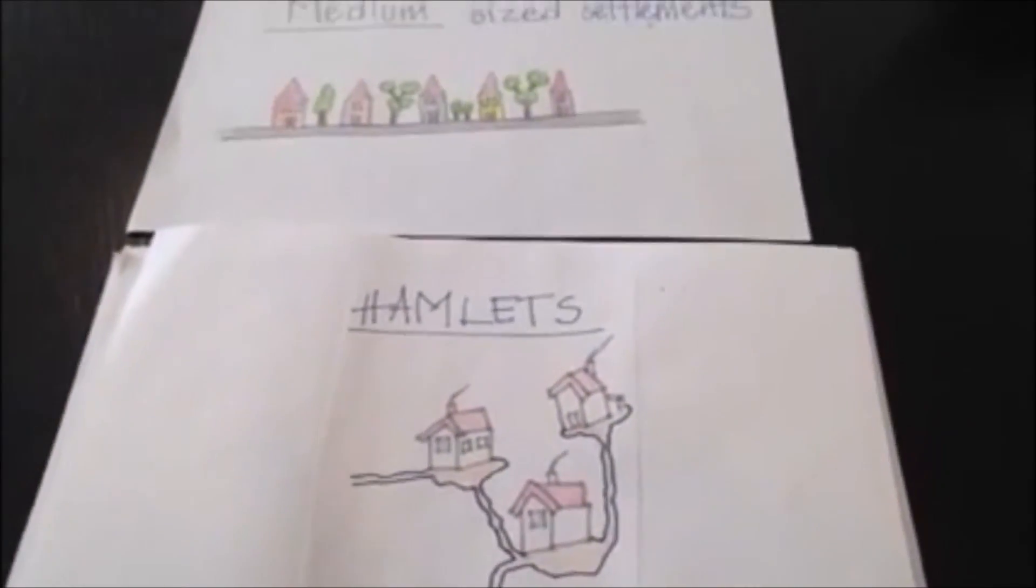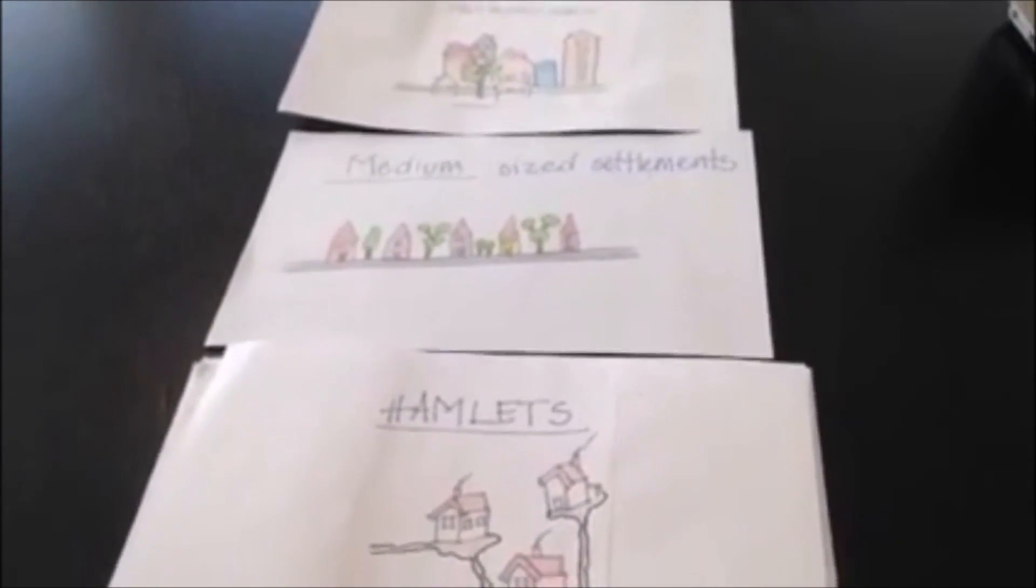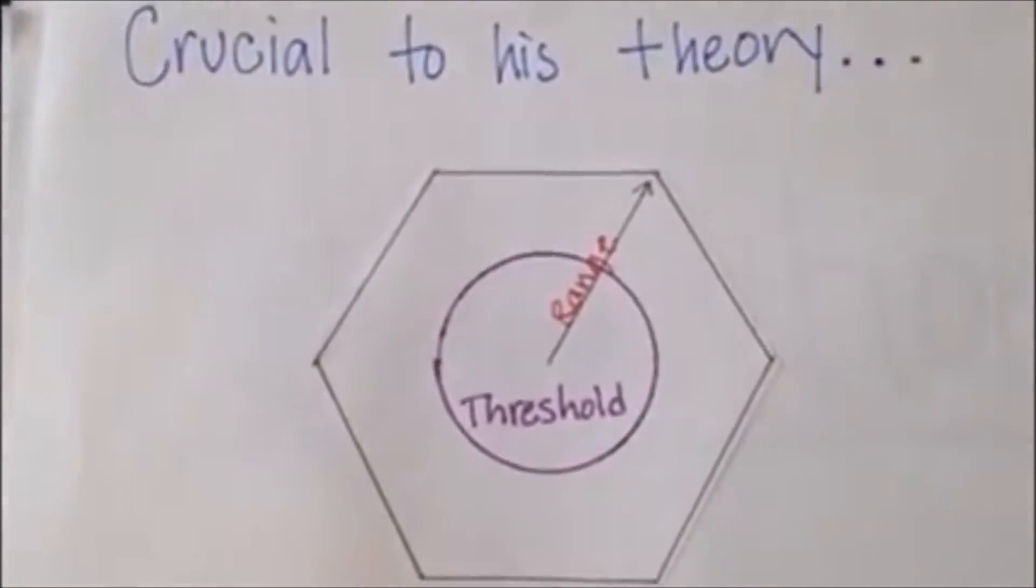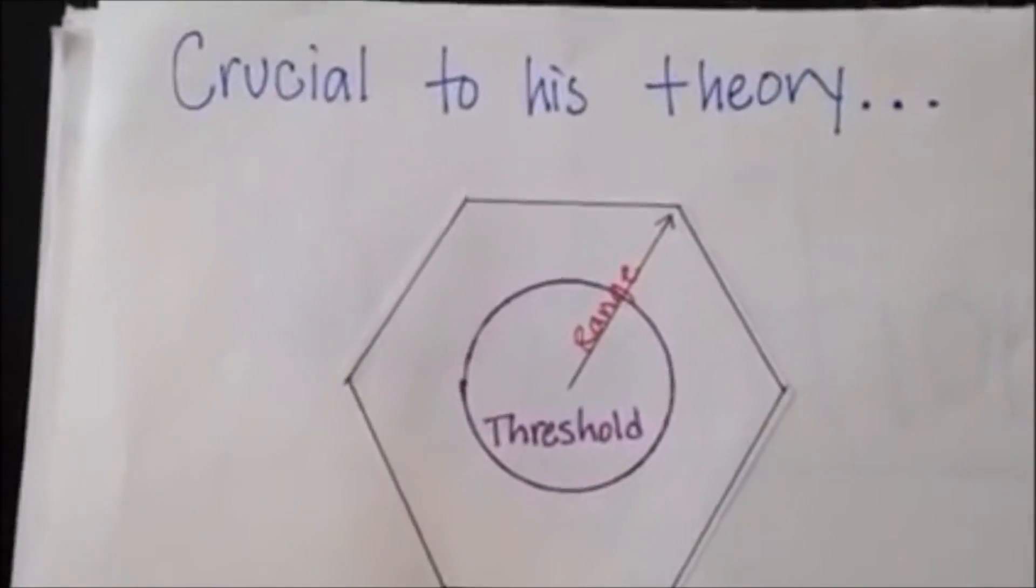Each high ranked central place offers all goods and services at the next lower ranked place plus at least one or two more. Crucial to its theory, different goods and services vary both in threshold and range.